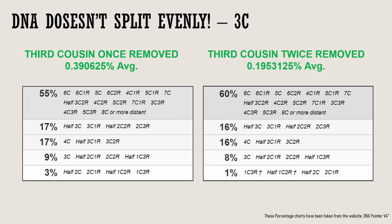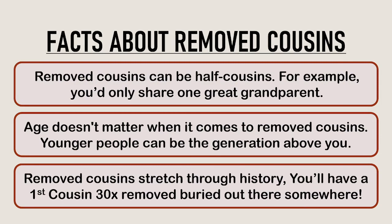Let's move on to some removed cousin facts. Removed cousins can be half cousins — for example, you'd only share one great-grandparent. Lots of people have half siblings and when you go down the generations these become half removed cousins. Age doesn't matter when it comes to removed cousins — younger people can be the generation above you. In fact, my father's first cousins, who are my first cousins once removed and my children's first cousins twice removed, are closer in age to my children than to my father.